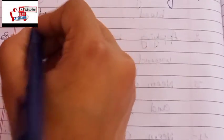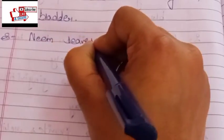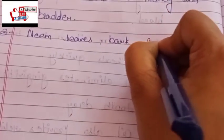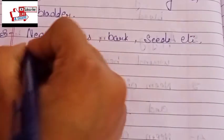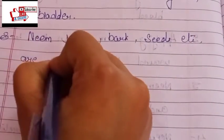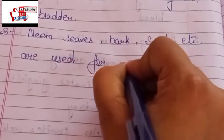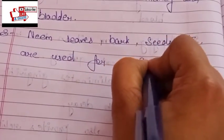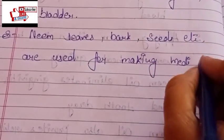Next, Neem leaves, bark, seeds, etc. are used for making medicines.